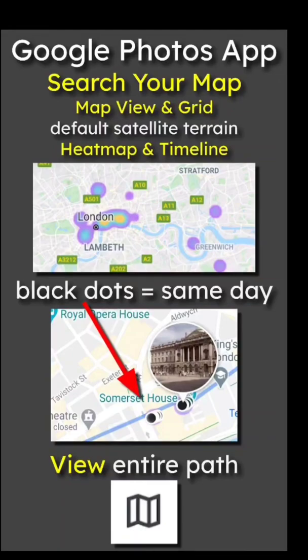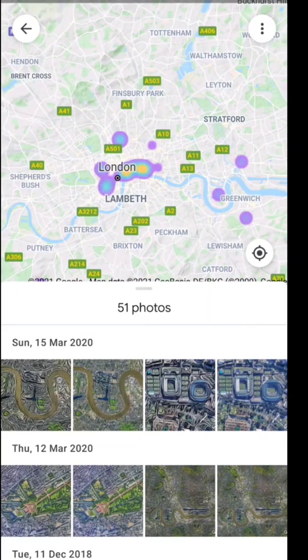In this video, using the Google Photos app, we're going to search your map and then look at the map view — the grid, default, satellite, and terrain — the heat map, and then the timeline. Look out for the black dots, which are photos on the same day, and at the bottom of the image is 'view entire path' with this unfolded piece of map-like paper. It's quite an amazing, interesting thing.